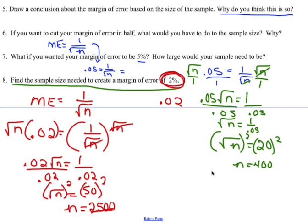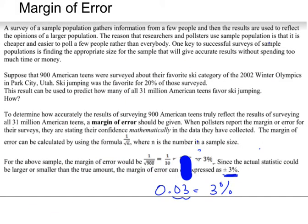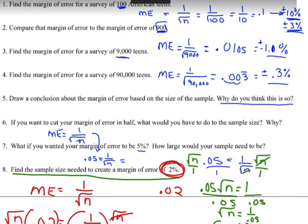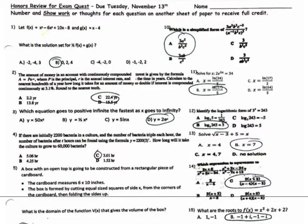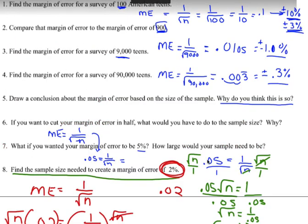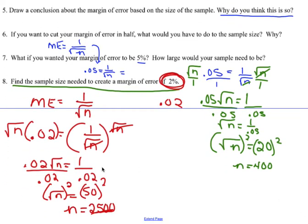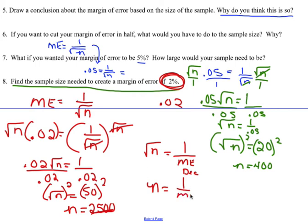So 2,500 is the number of people you would need in your study to get a 2 percent margin of error. There are different ways to work through this. A shortcut formula: you can also express n as one over the margin of error (as a decimal), squared. That's n equals one over the margin of error squared — which is just solving the original formula for n. Either approach works.